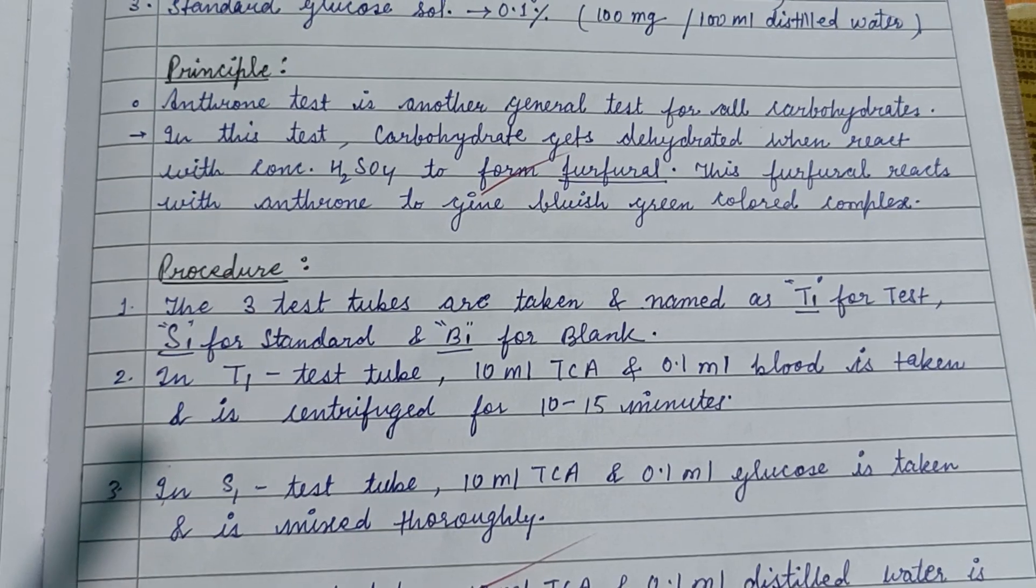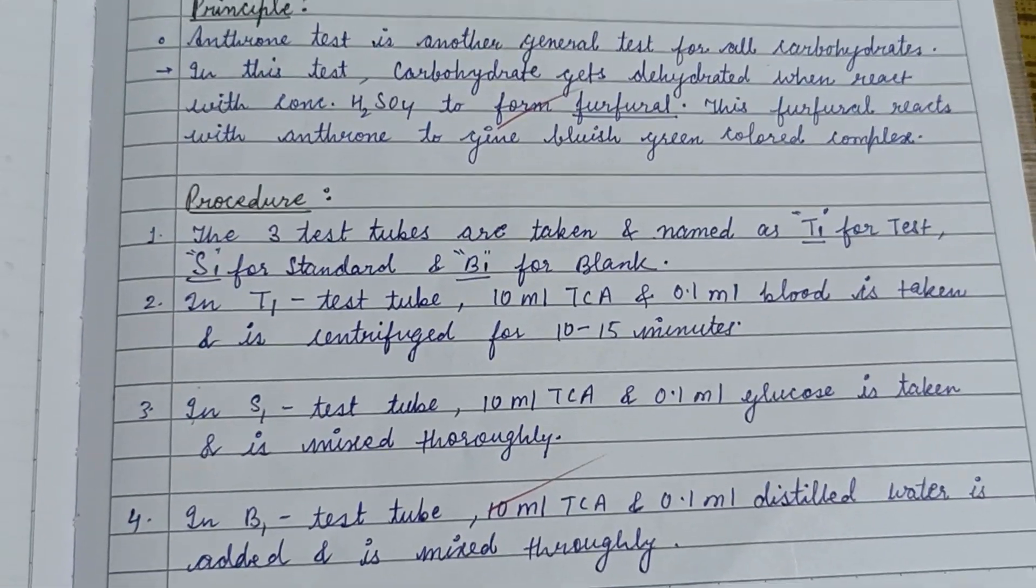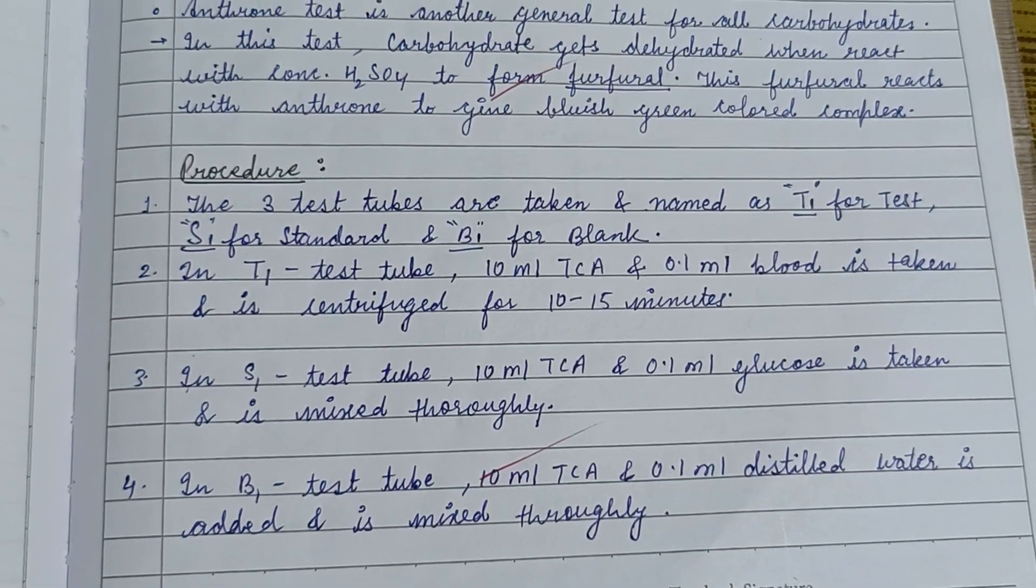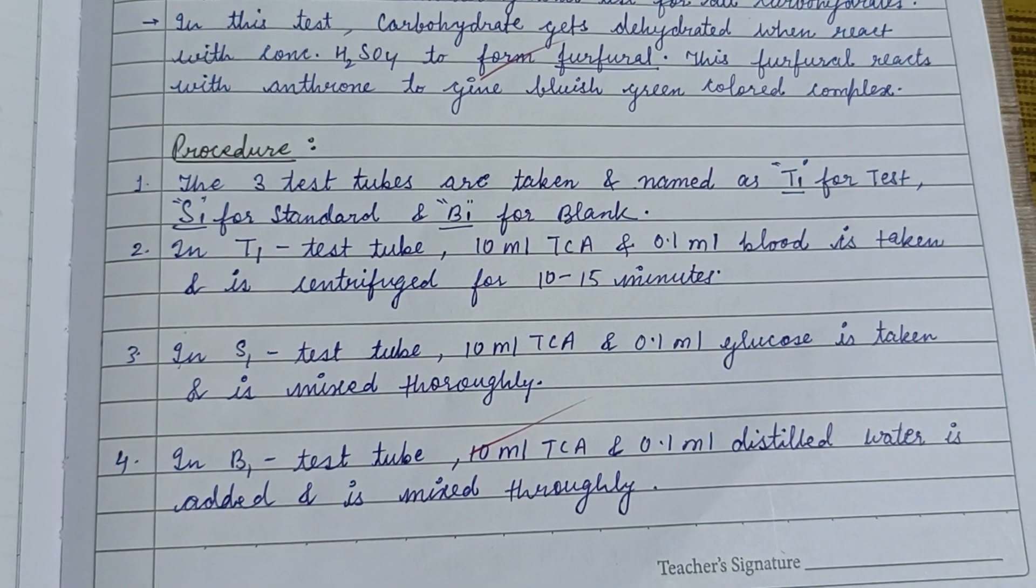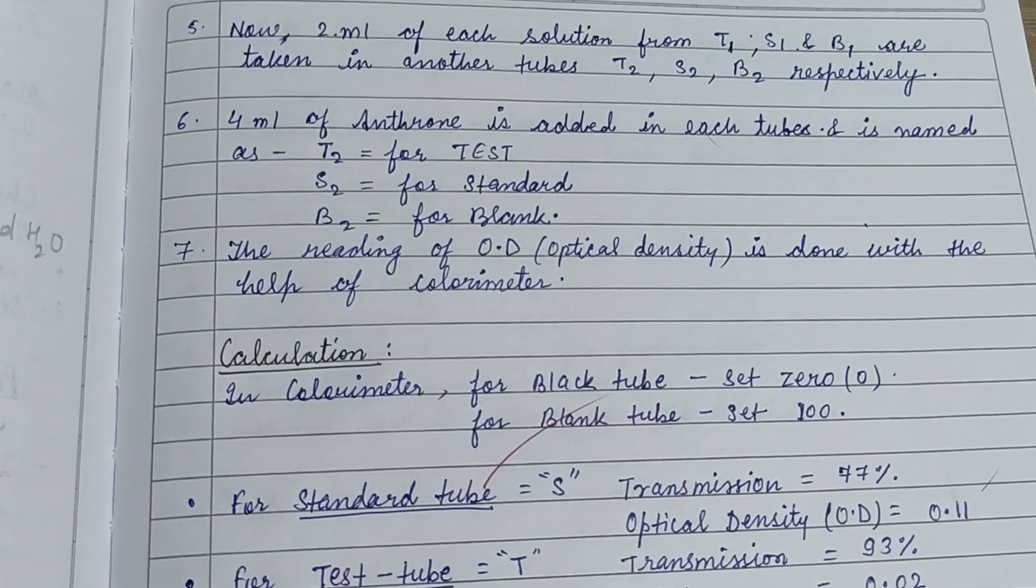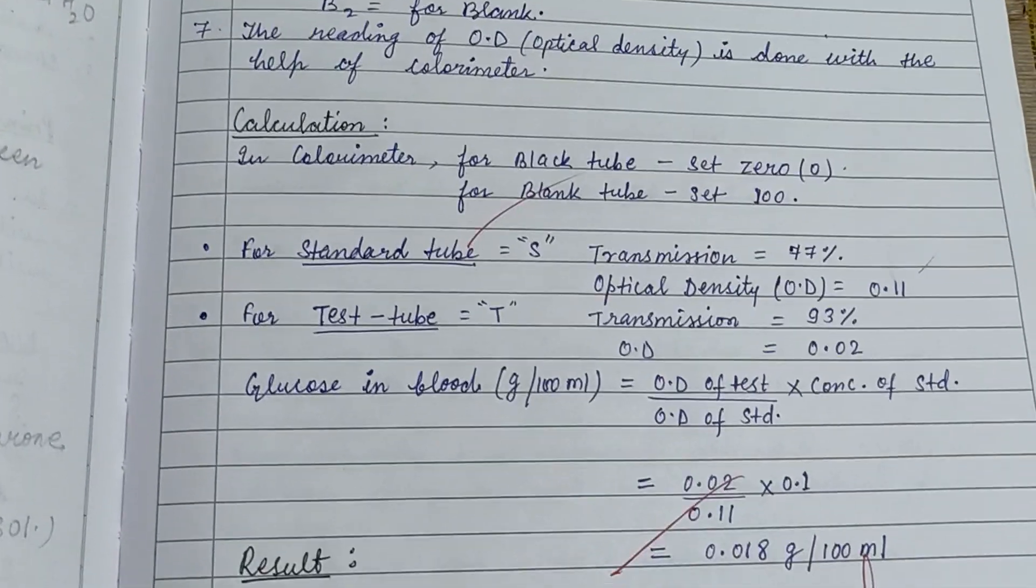Principle: The anthrone test is another general test for all carbohydrates. In this test, carbohydrates get dehydrated when they react with concentrated acid to form furfural. This furfural reacts with anthrone to give a bluish-green colored complex.